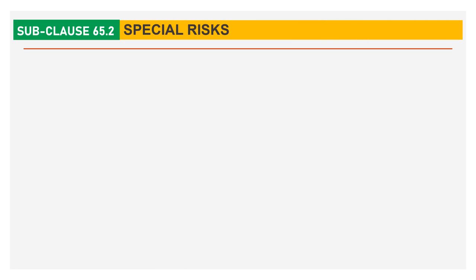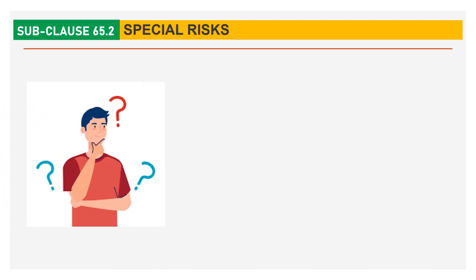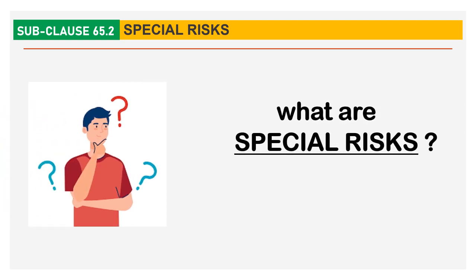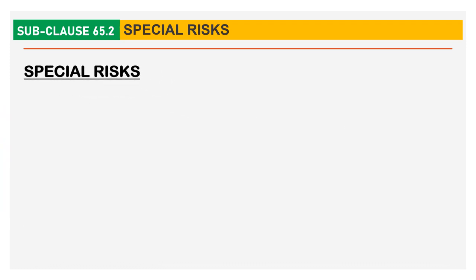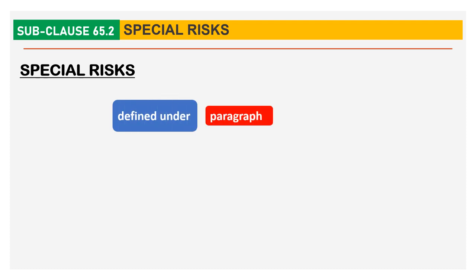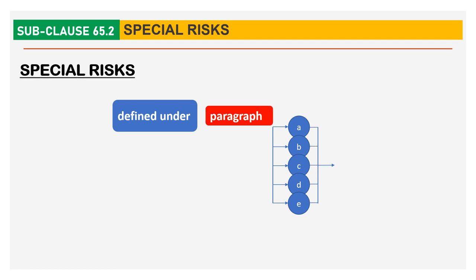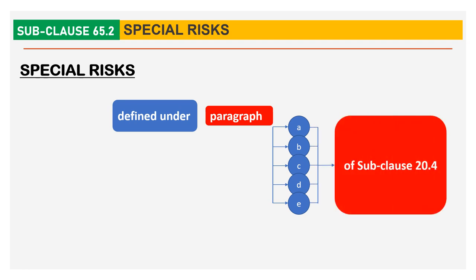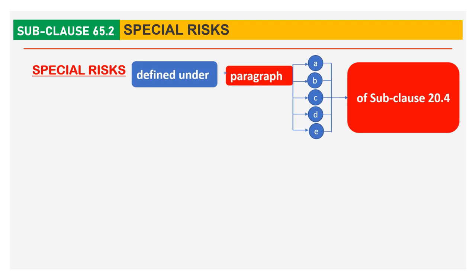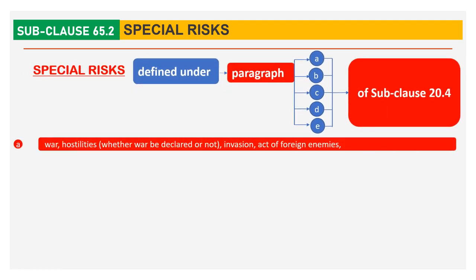First we will discuss sub-clause 65.2 Special Risk. What are Special Risks? Special Risks are defined under paragraphs A, B, C, D and E of sub-clause 20.4. We have already discussed sub-clause 20.4 in our previous lecture. Following are the details of Risks A, B, C, D and E.